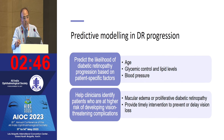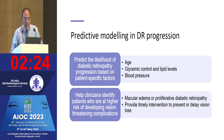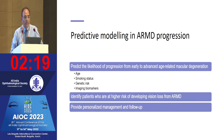Predictive modeling has also been used in diabetic retinopathy progression, predicting the likelihood of progression based on patient-specific factors such as age, glycemic control, lipid levels, and blood pressure. It helps clinicians identify patients at higher risk of vision-threatening complications such as macular edema or proliferative diabetic retinopathy, enabling timely intervention to prevent or delay vision loss.